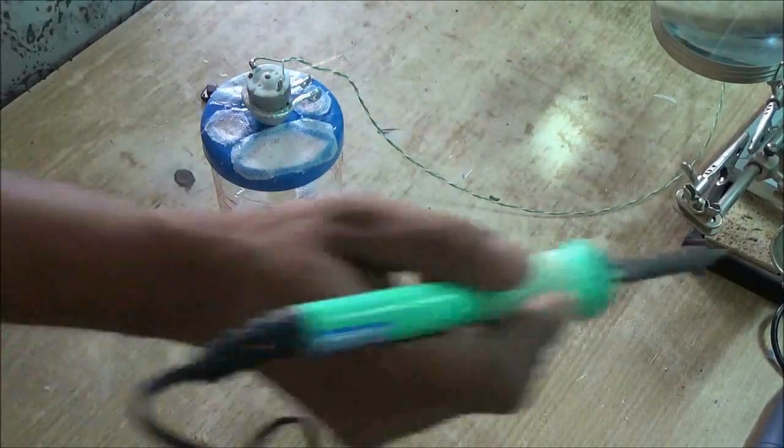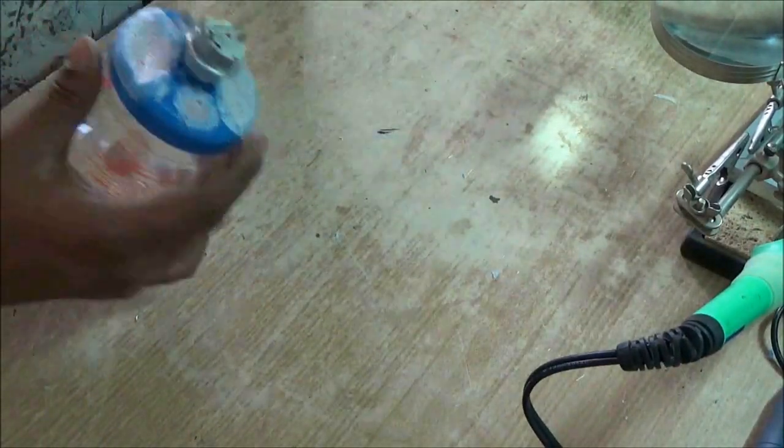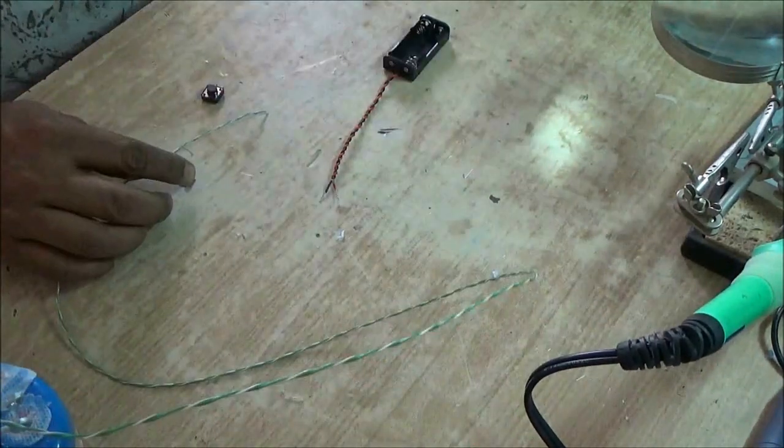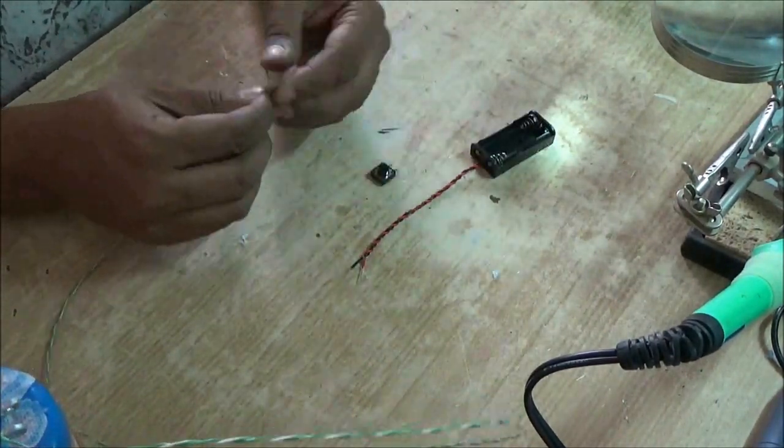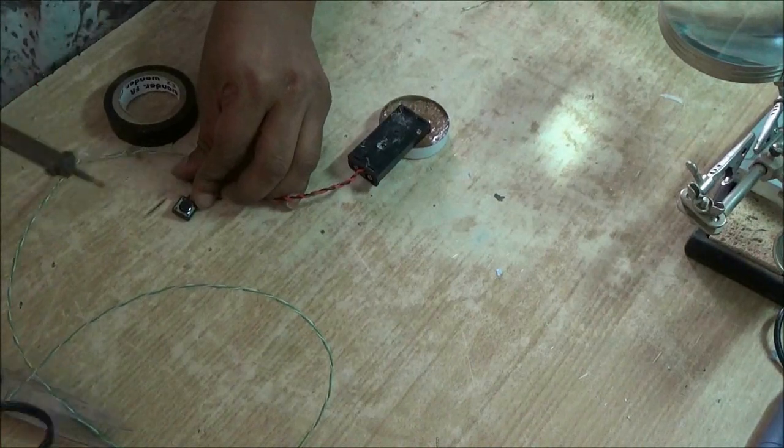Solder a long wire with the DC motor, a small switch, and a battery holder. There are two batteries.